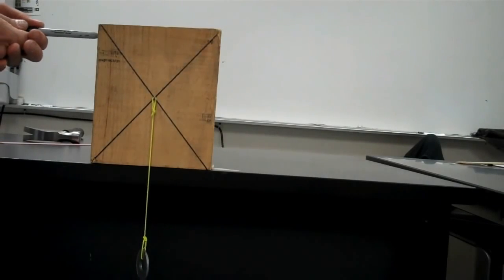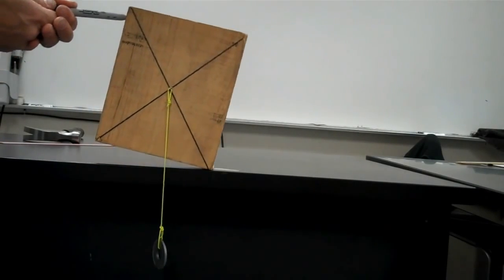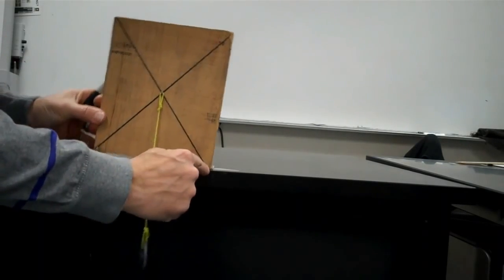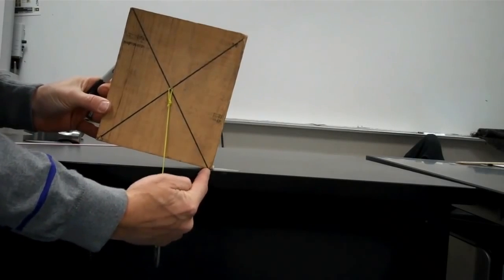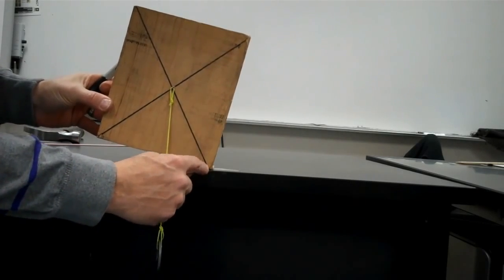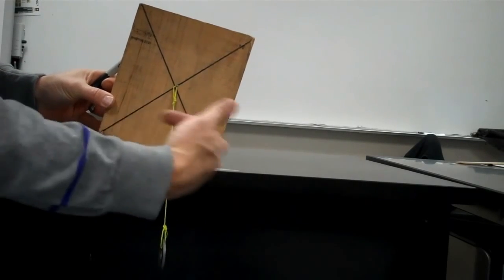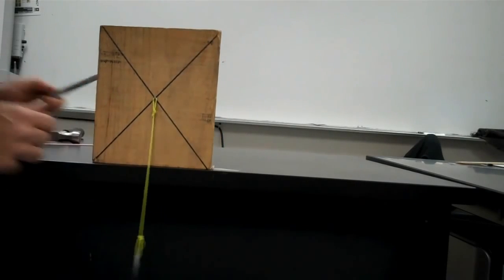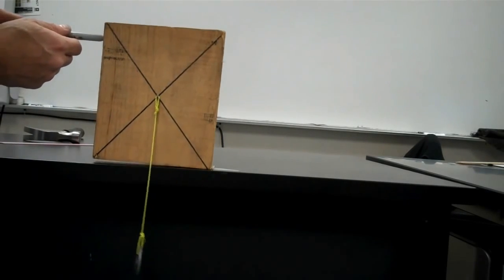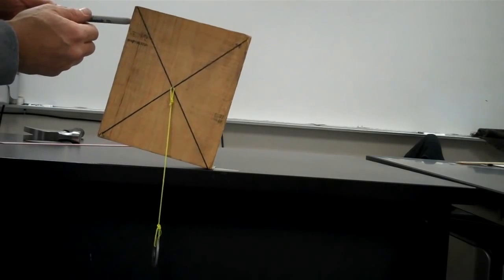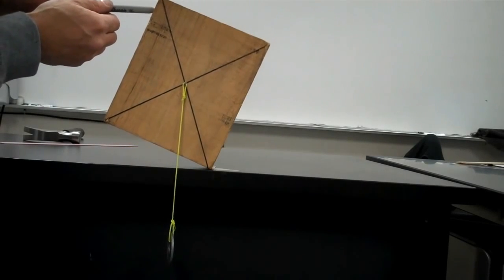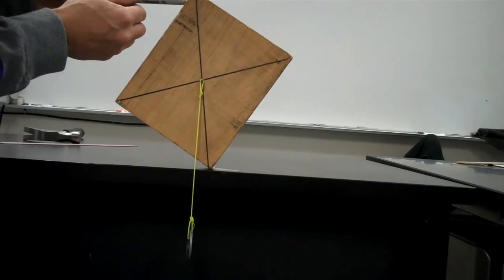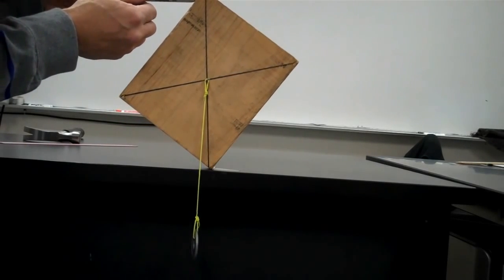If I take the block and tip it, as long as the center of mass stays on this side of the support point, right here where the block is touching the table, the block is going to continue to fall to that side. I'll keep tipping it until you notice that as soon as the string passes onto the other side of the support point, that's when the block will tip over.